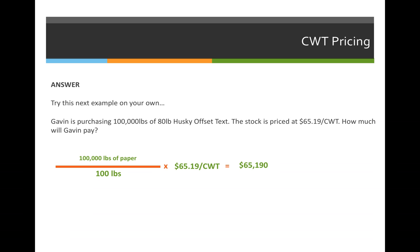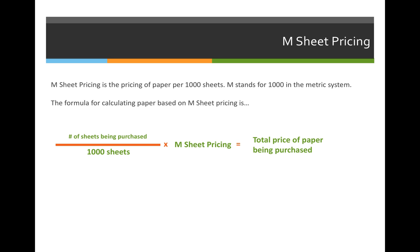That's a lot of paper. M sheet pricing has a very similar looking formula to 100-weight pricing. The biggest difference, however, is the values that you input. If you look at this formula carefully, you'll notice that instead of inputting the weight of the paper and dividing by 100 pounds, you're going to take the number of sheets needed and divide by 1,000 sheets, because M stands for 1,000, and M sheet pricing is the price per 1,000 sheets of paper.